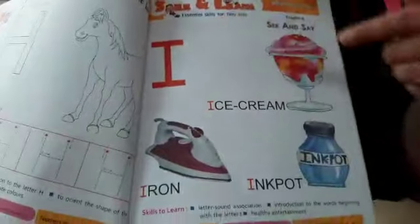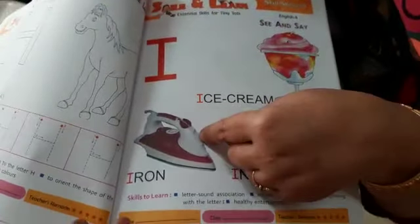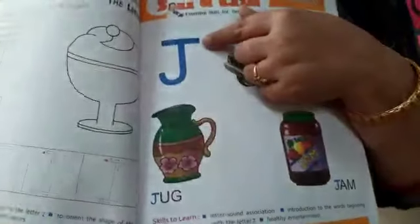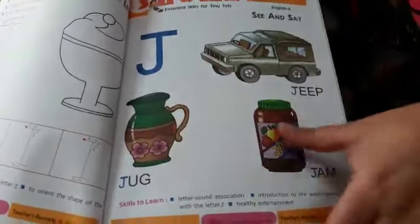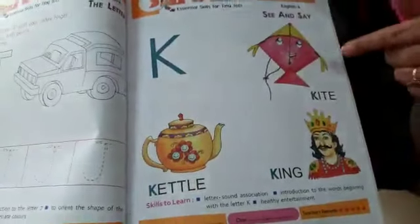I, ice cream, iron, ink pot. J, jeep, jug, jam. K, kite, kettle, king.